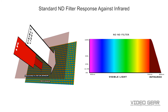Let's look at the differences. Standard ND filters only decrease light in the visible spectrum. However, digital camera sensors are also sensitive to infrared light. To deal with this issue, camera vendors include a filter over the sensor that decreases infrared light so it doesn't contaminate the image.